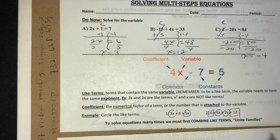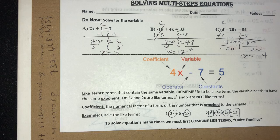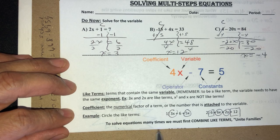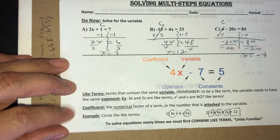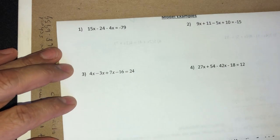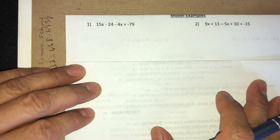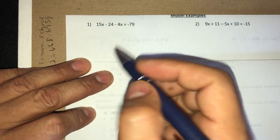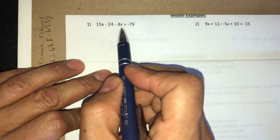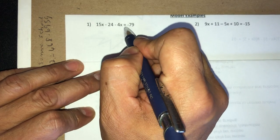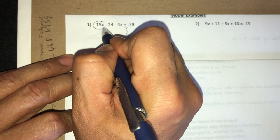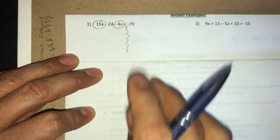Now we're going to do our first example, which has to do with combining like terms. To solve equations, many times we must first combine like terms — I always say combine the family, unite families. We have an equation with like terms, and we need to make sure we combine like terms on both sides. In this case, only the left side has like terms.